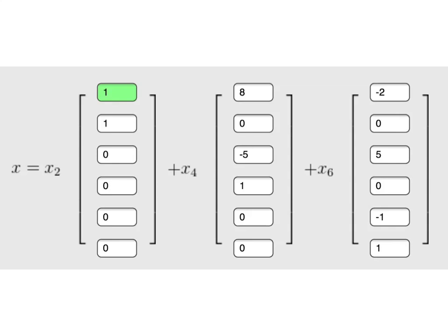So, those are the five steps for writing a solution to a homogeneous system in parametric vector form.